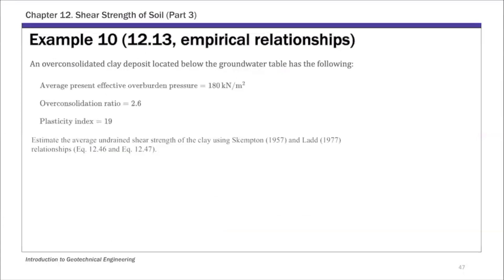The first example, this is example 10. This is for using empirical relationships between Cu and overburden pressure. For this example, we have an overconsolidated clay deposit.